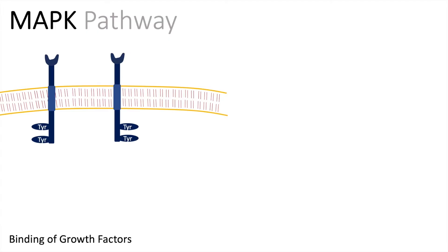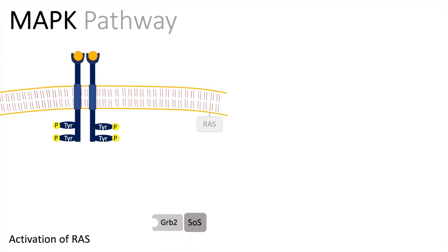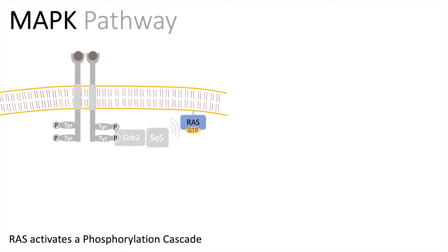But let's start at the beginning — how is this whole process activated? First we need a stimulus. Growth factors can bind to our receptor tyrosine kinases, and the binding leads to dimerization. This dimer can then get transphosphorylated, allowing for the docking of proteins. These proteins, GRB2 and SOS, can then lead to the activation of RAS. RAS has now bound GTP, which makes RAS active, and RAS activates a whole phosphorylation cascade.